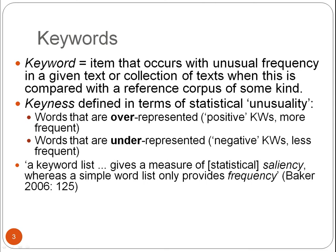How is a keyword list different from a frequency list? As Baker says, a keyword list gives a measure of statistical saliency, whereas a simple word list only provides frequency.